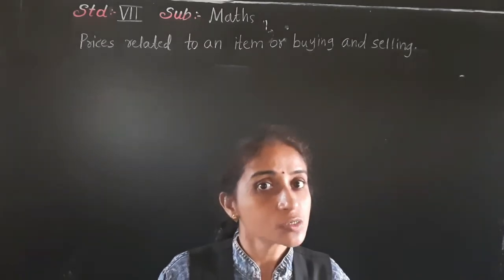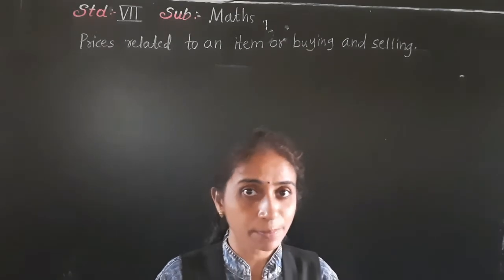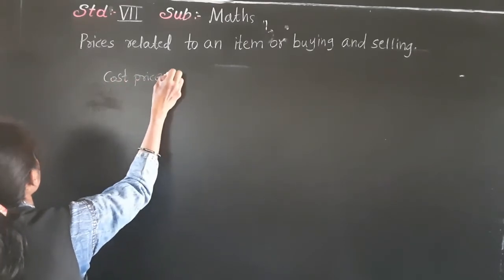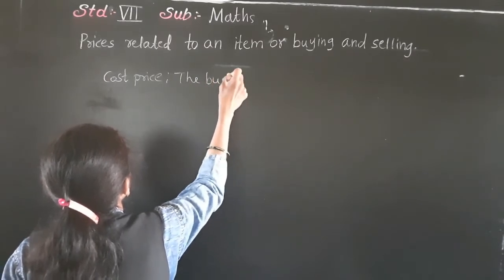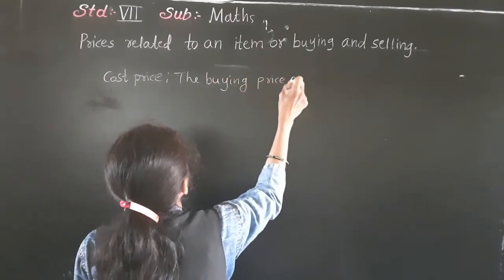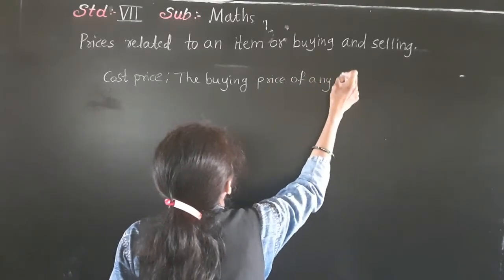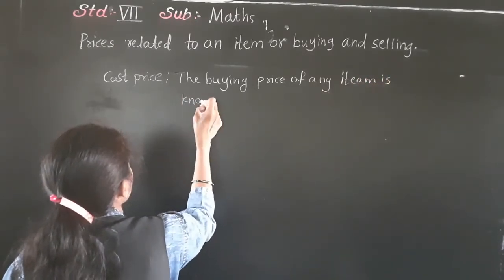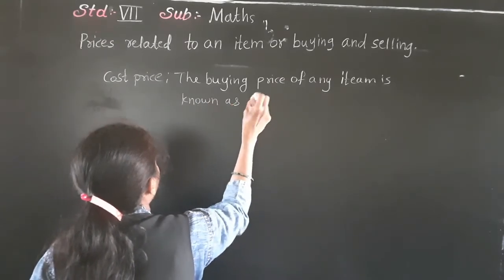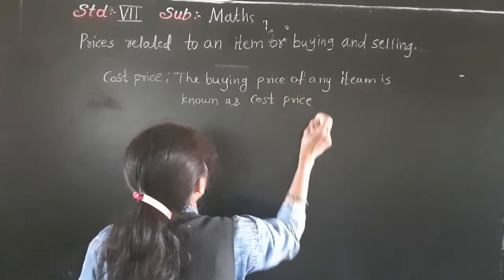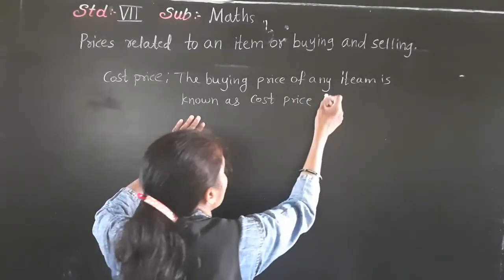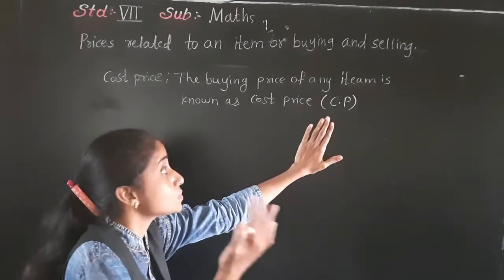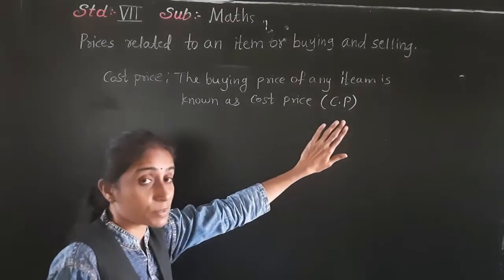So 520 rupees is the selling price. The buying price of any item is known as cost price — we write it as CP. I bought t-shirts from the wholesaler; the cost of one t-shirt is 500 rupees, so that is the cost price.